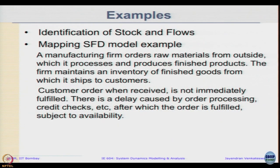Let us take a very more straightforward example where many things may be physical. The manufacturing firm orders raw material from outside which it processes and produces finished products. The firm maintains inventory of finished goods from which it ships to customers. Customer order when received is not immediately fulfilled, there is a delay caused by order processing, credit checks etcetera after which the order is fulfilled subject to availability.